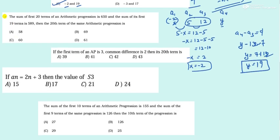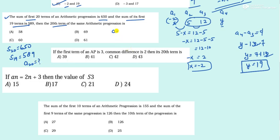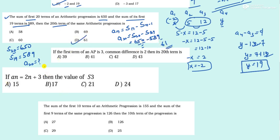Next: The sum of the first 20 terms S_20 = 650 and the sum of the first 19 terms S_19 = 589. Find the 20th term. Use the formula a_n = S_n − S_(n−1), so a_20 = S_20 − S_19 = 650 − 589 = 61. Option D.